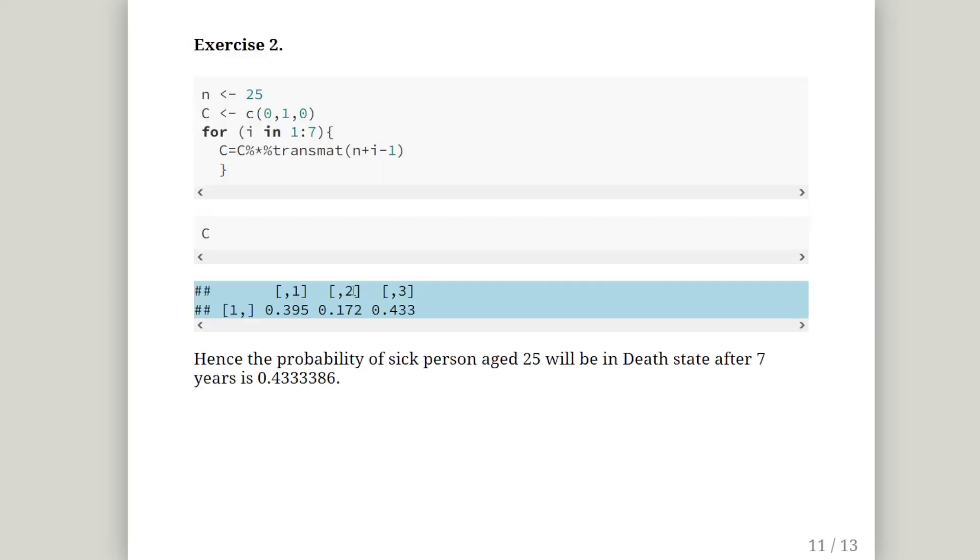We do the same again for a 25 year old. What is the probability that a 25 year old who was currently sick will be dead in seven years time? So n is 25. We're going to set up this state vector here: 0, 1 and 0. Not healthy, sick, so 1 for sick, 0 for dead.